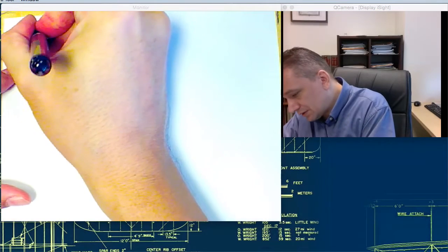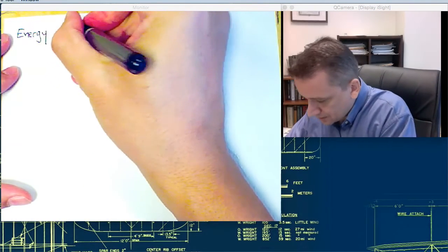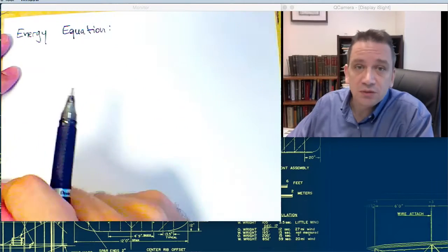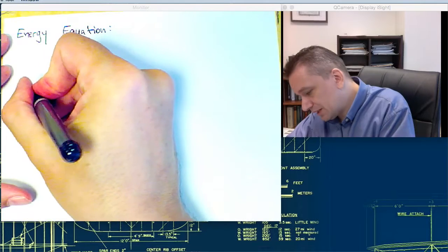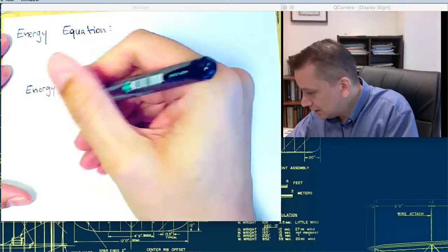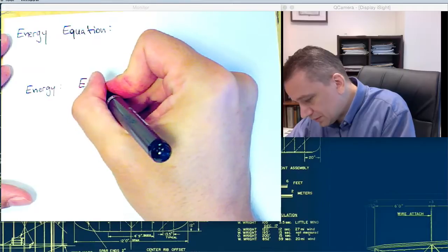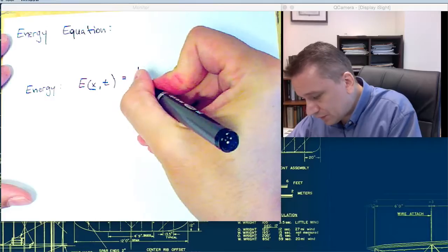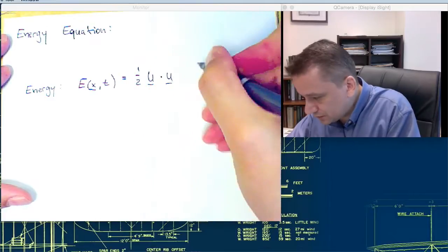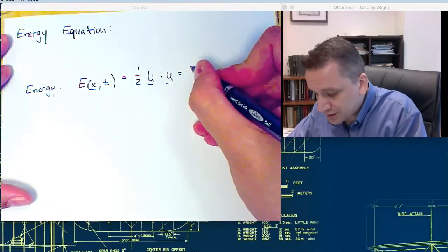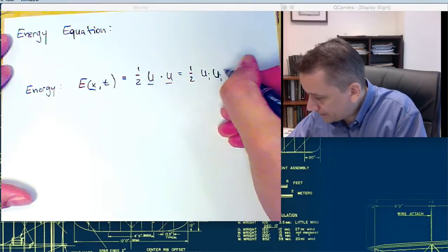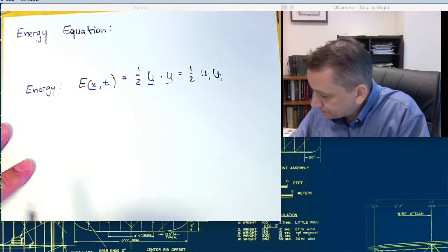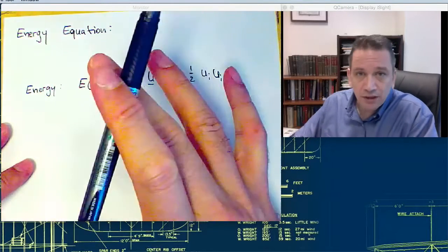So, energy equation. For that we first need to define what the energy is. The energy we define as E, a function of x, the location vector, and time. That is one half u scalar u, or in index notation that is one half ui ui. This is the total energy of the entire flow.